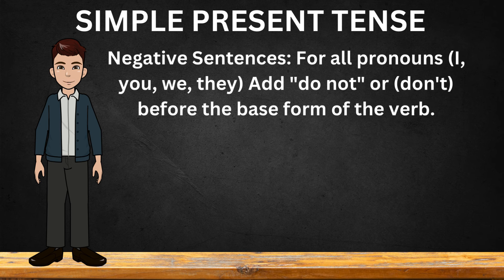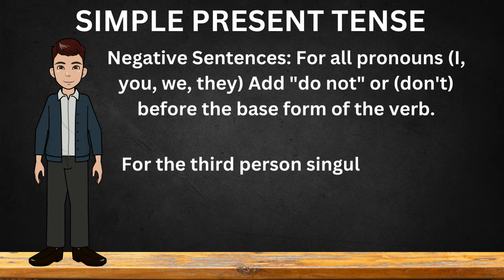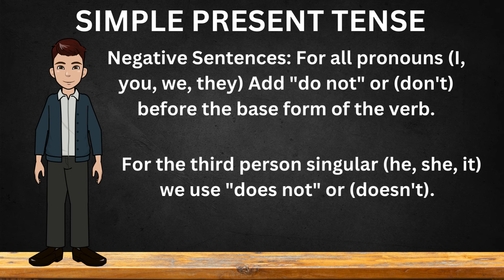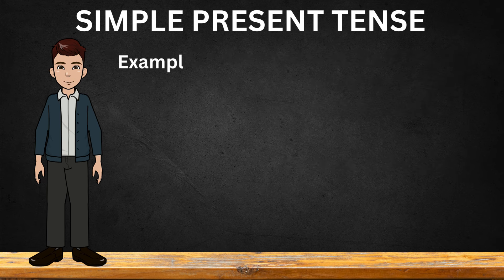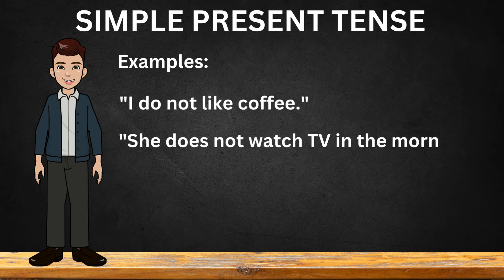Negative sentences: for all pronouns — I, you, we, they — add 'do not' or 'don't' before the base form of the verb. For the third person singular — he, she, it — we use 'does not' or 'doesn't'. Examples: I do not like coffee. She does not watch TV in the morning.